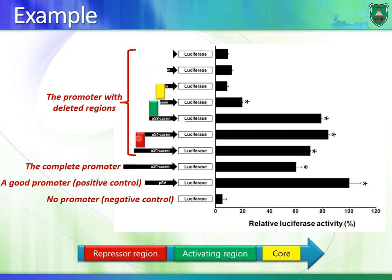I keep chopping off the promoter sequence by sequence. Removing one part shows little difference — not much reduction. But when I remove the activating region, notice the significant drop in luciferase production — the reduction measured by how much light is produced. This drop in luciferase production tells me that this region contains an activating region.